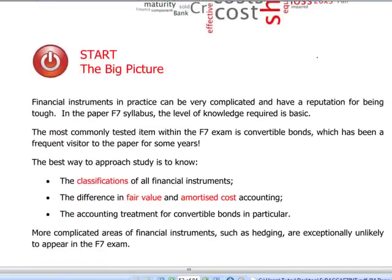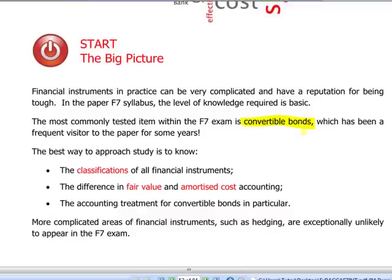The most complicated thing in the exam will be a convertible bond, which is the examiner's favourite. How to study financial instruments? First of all, we have to know how to classify them — either as financial liabilities or financial assets, debt instruments or equity instruments. We have to know the difference between amortized cost accounting and fair value accounting, and the accounting treatment of convertible bonds in particular.